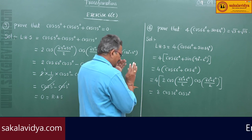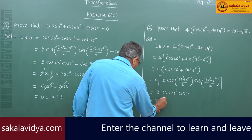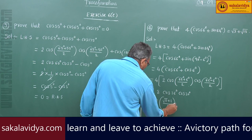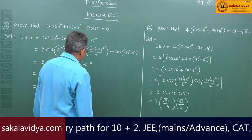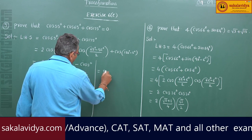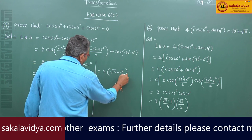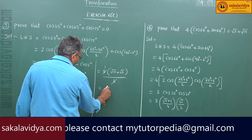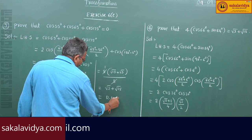So we have 8 × cos36° × cos30°. Substituting cos36° = (√5+1)/4 and cos30° = √3/2, we get 8 × (√5+1)/4 × √3/2. The 8 cancels, giving us √3 + √15, which equals the RHS.